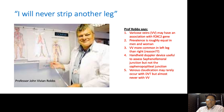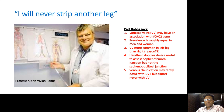Varicose veins may have an association with a genetic predisposition, and the specific gene is the FOXC2 gene. Secondly, the prevalence of varicose veins is roughly equal in men and women. Varicose veins are more common in the left leg than the right — no one has really been able to come up with an explanation for this. The handheld Doppler device is useful to assess the sapheno-femoral junction, but not the sapheno-popliteal junction. So if you use it in the groin region it can be very useful, but unfortunately in the back of the knee it is not.